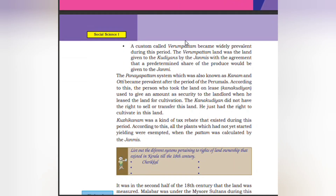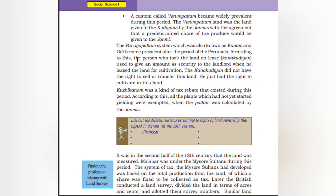A custom called Virumbattam became widely prevalent during this period. The Virumbattam land was given to the kudians by the Jenmies with the agreement that a predetermined share of the produce would be given to the Jenmies. The Panyapatam system, also known as Karanam and Uti, became prevalent after the period of the Perimars. According to this system, the person who took the land gave a security amount to the landlord. The Karnakudian did not have the right to sell or transfer this land; he had only the right to cultivate it.